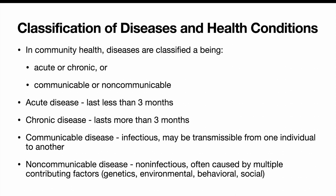The first thing we have to think about is the classification of diseases and health conditions. In community health, we classify diseases as being either acute or chronic, and communicable or non-communicable. Acute disease lasts less than three months. A chronic disease lasts more than three months. A communicable disease is infectious and may be transmissible from one individual to another. A non-communicable disease is not infectious, and is often caused by multiple contributing factors like genetics, the environment, behaviors, and social circumstances.